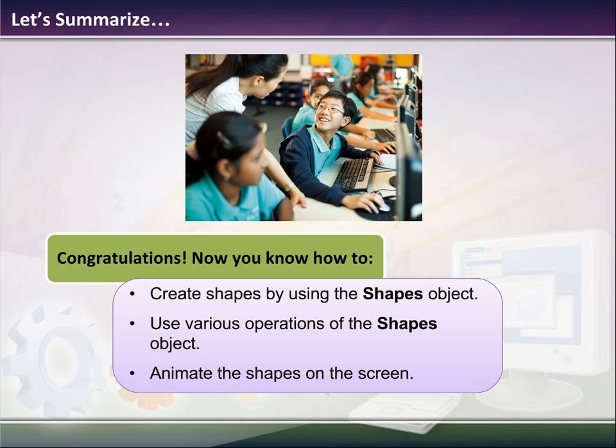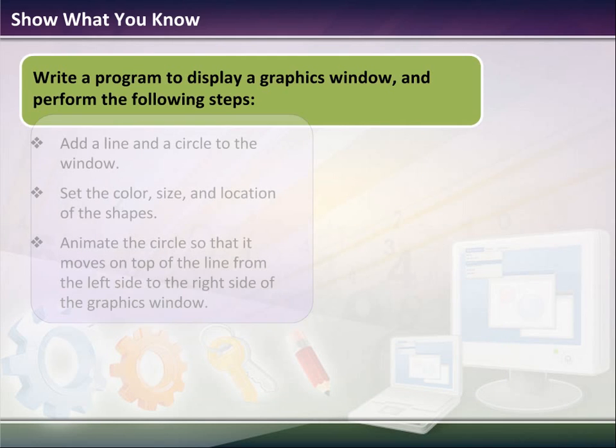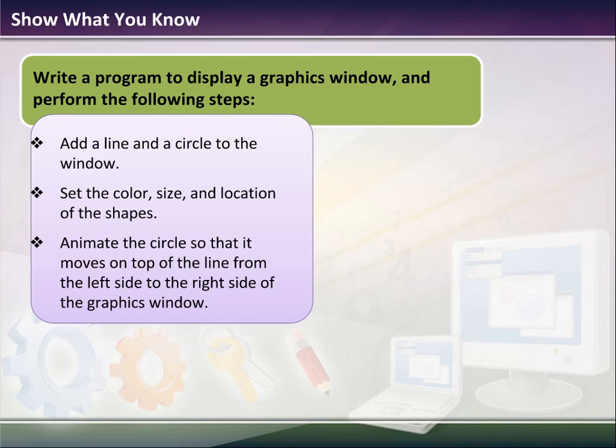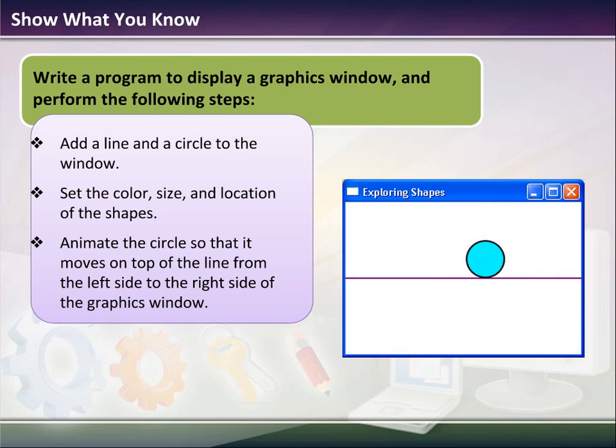What we should be able to do is create shapes using the shape object. We should be able to use various operations of the shape object to animate, move, rotate. The challenge for you guys is to add a line and a circle to a window, set the color of the size and location of the shapes, and try to animate the circle so it looks like it moves across the line from left to right.